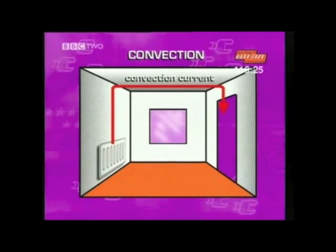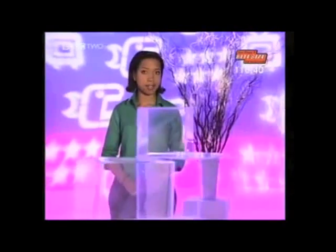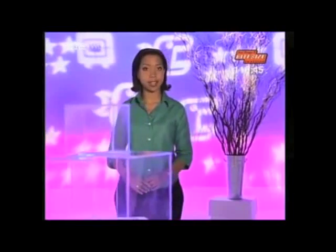The second way thermal energy travels from hot things to cold things is convection. This is where heated material moves in bulk to a cooler region and takes the heat with it. For example, this is how radiators heat up a room — the air above a radiator warms up first and rises to cooler parts of the room; colder air replaces the warmer air and again rises, creating a convection current.